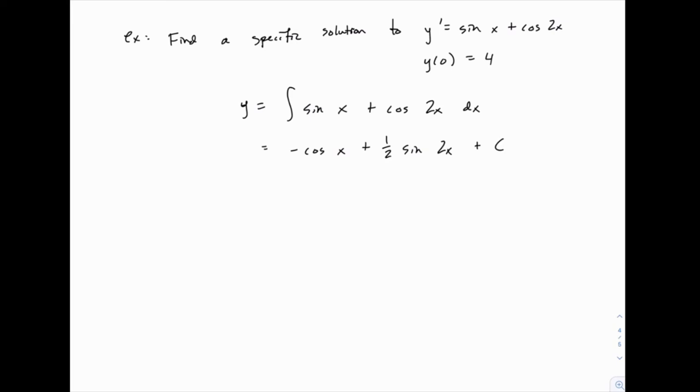Again, if you need to review those integrals and pause and do them more slowly, feel free to. But then, knowing the information about the initial condition that we're given, we can solve for this constant c by plugging in 0 for x and 4 for y. So 4 equals negative cosine of 0 plus 1 half sine of 2 times 0, which is just 0, plus c.